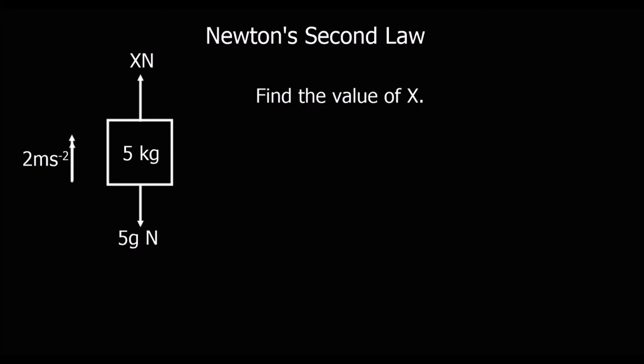Here's another question: find the value of X. Same sort of situation, we use F equals MA. F is the resultant force, so forces up minus forces down equals mass times acceleration. X minus 5G equals 5 times 2, which is 10. So X equals 10 plus 5G newtons.